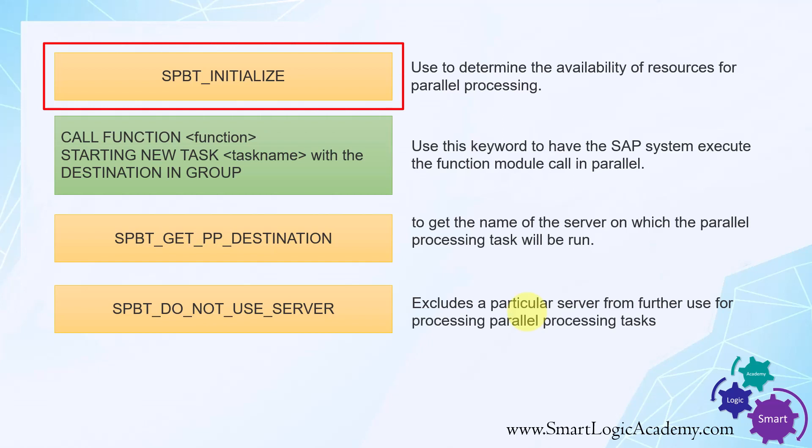SPBT_INITIALIZE: this function module is used to determine the availability of resources for parallel processing. The input is the parallel processing group name — you can use it to check whether a given group name is correct. The output is the total number of dialogue work processes available, so you can more efficiently size the packet of data to be processed.